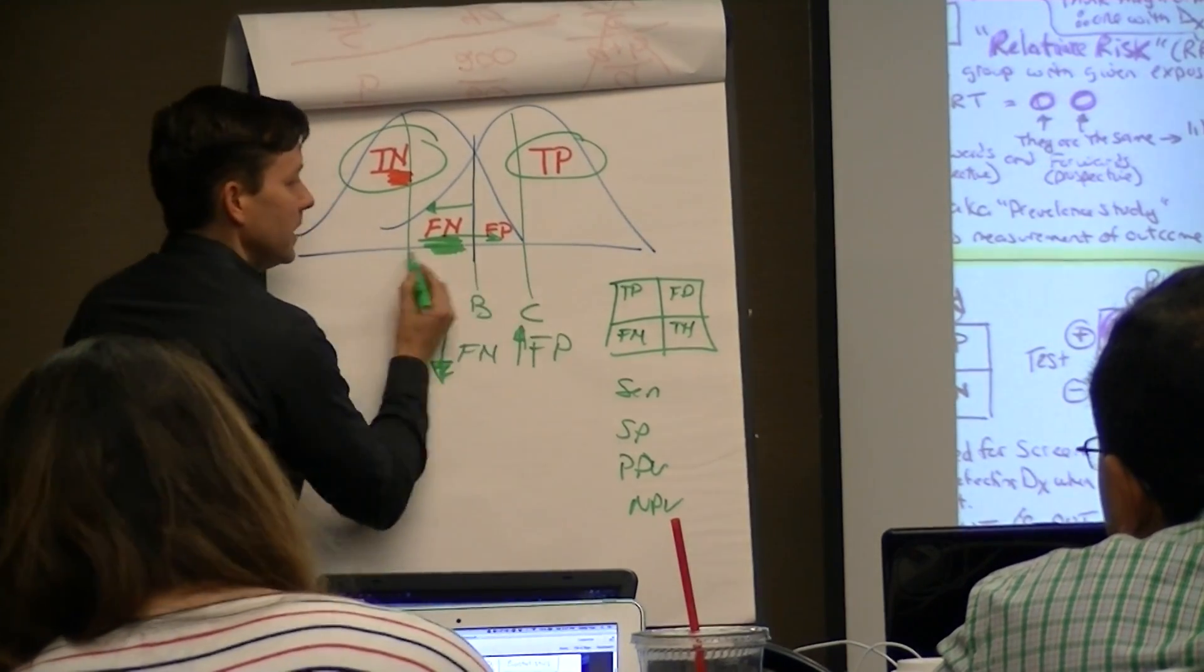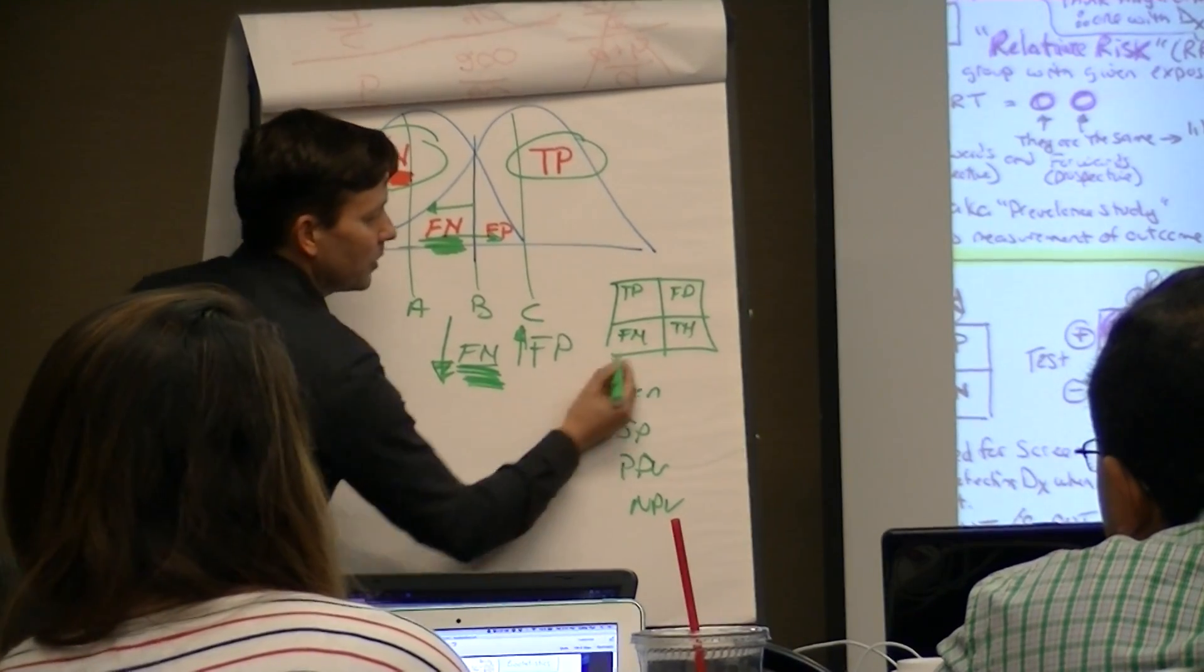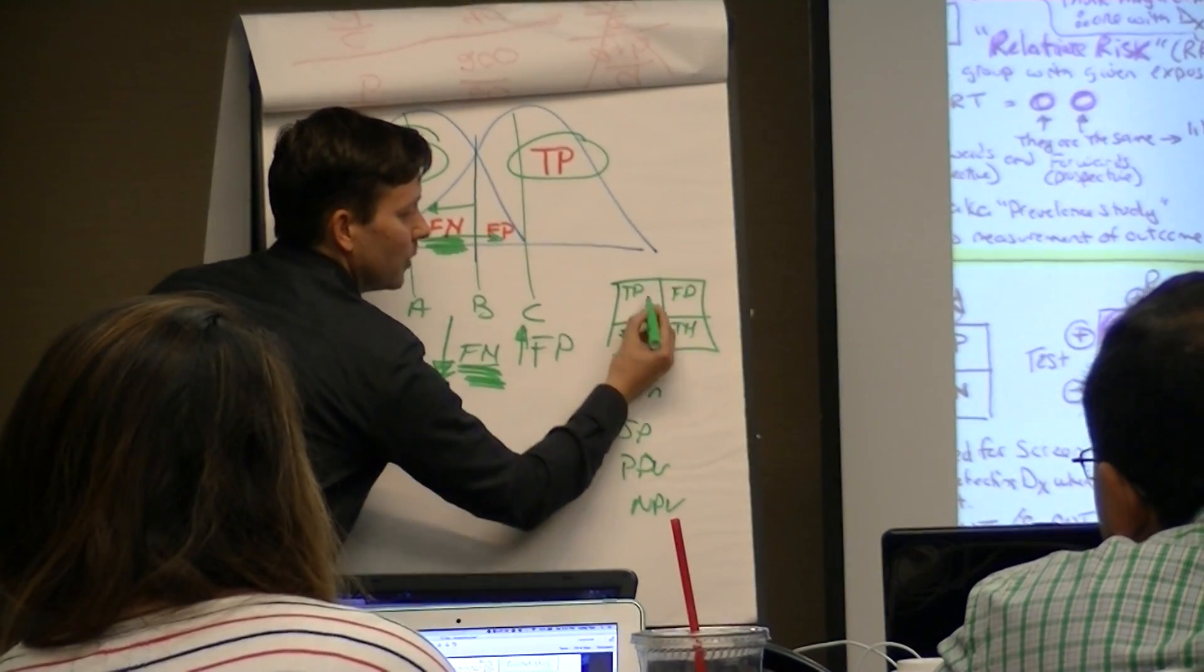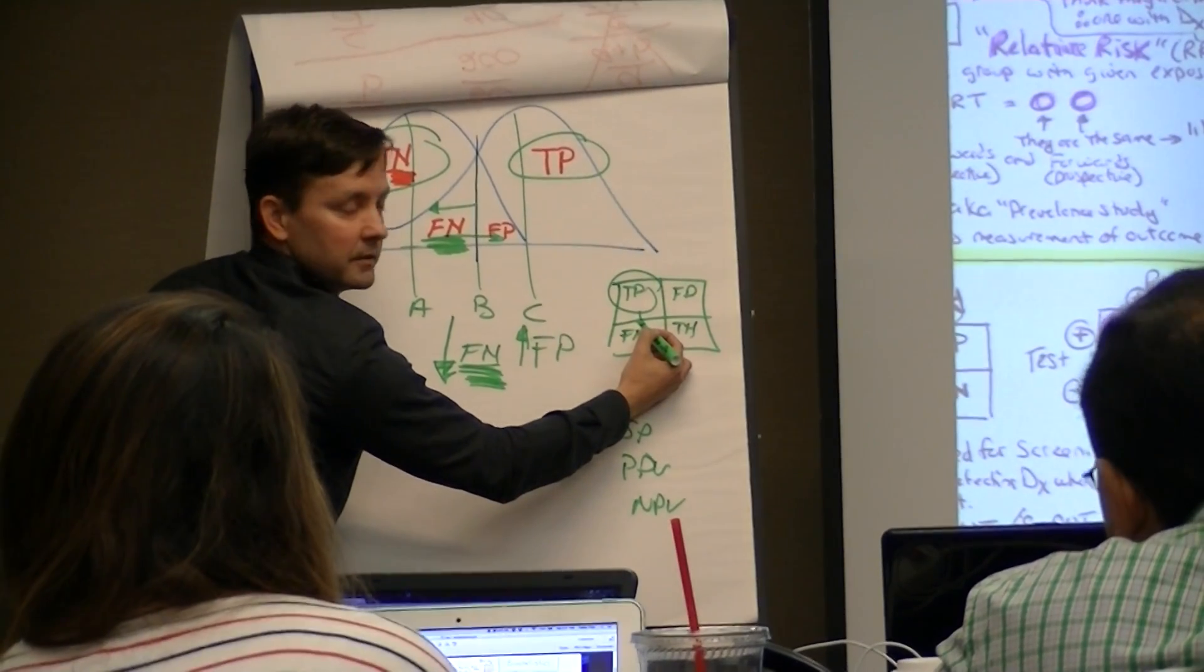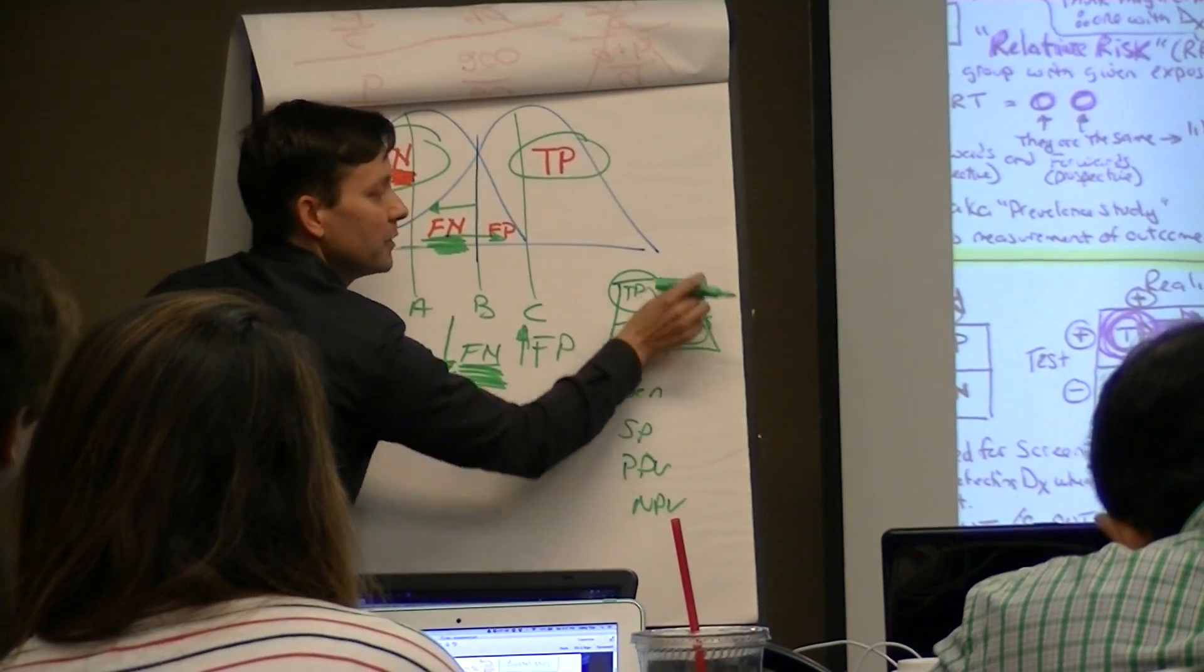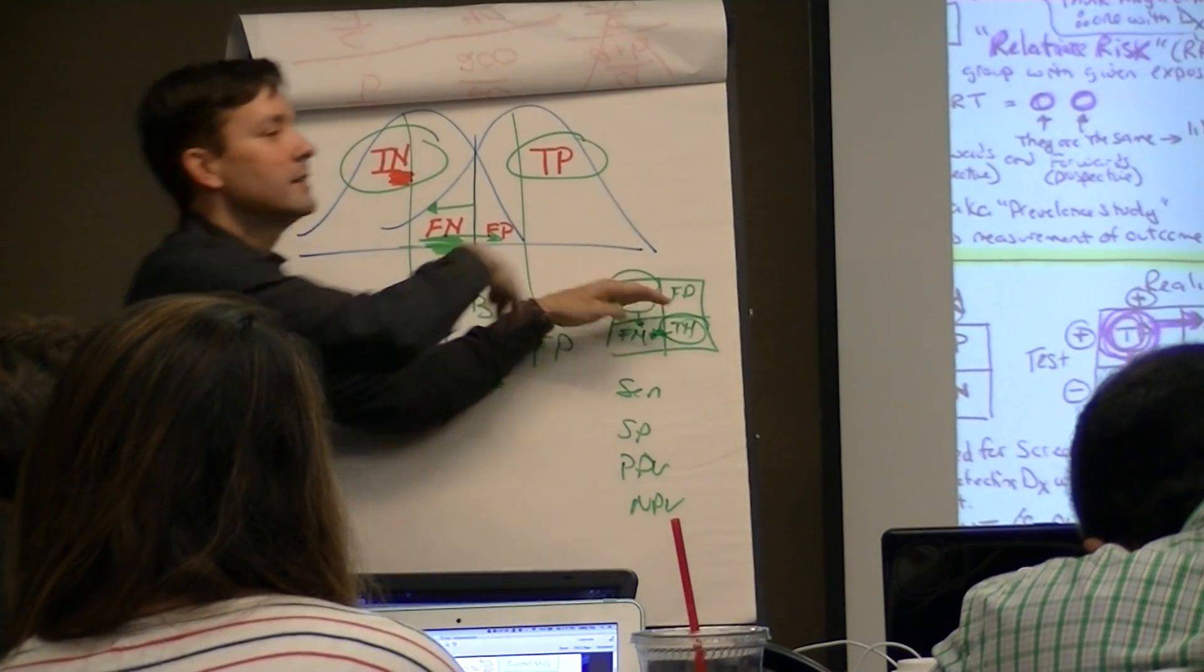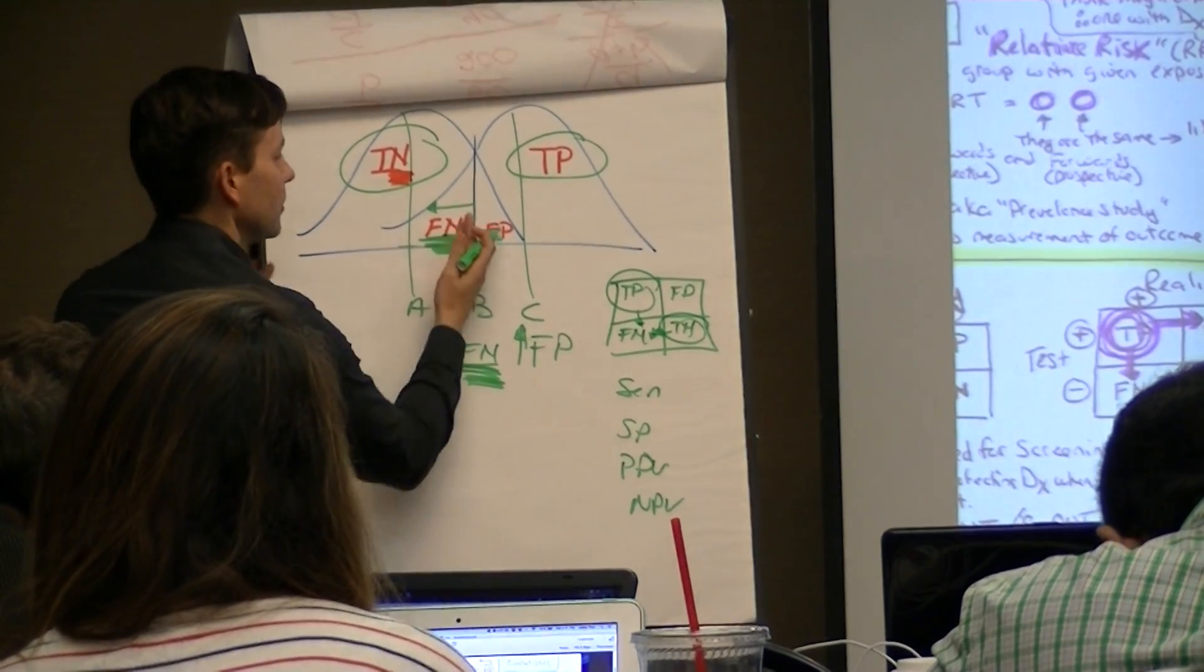So if the number went this way, false negative went down. Well okay, so that number went down. Well heck, that only affects my sensitivity. And it might affect my negative predictive value, but it won't affect anything of specificity, it won't affect positive predictive value. It's irrelevant, but you've got to know this.